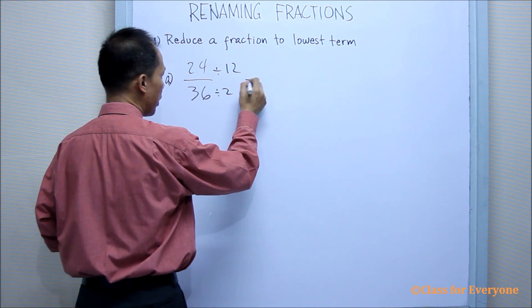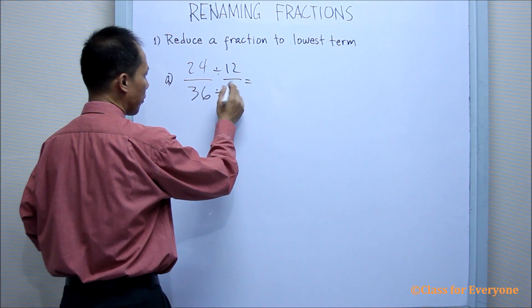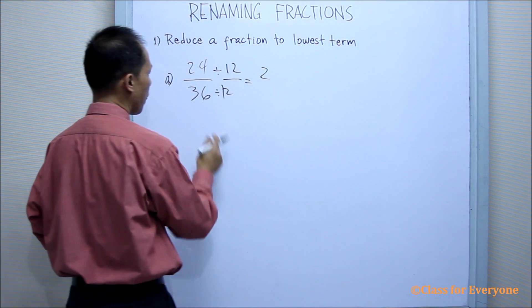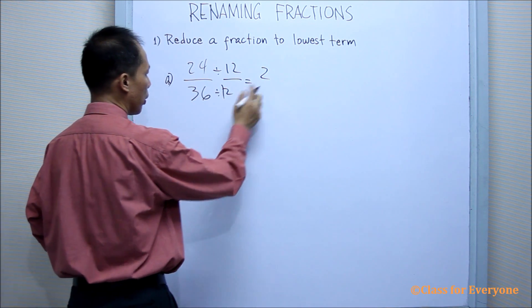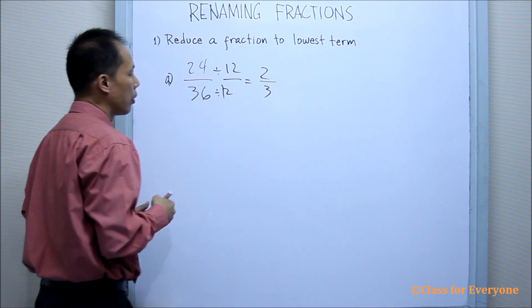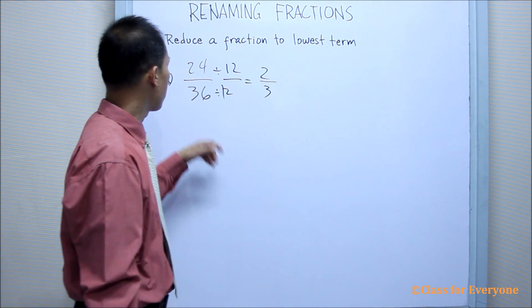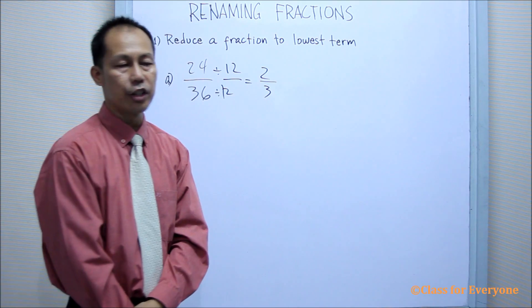Divide both the numerator and the denominator by 12. So 24 divided by 12 is 2, and 36 divided by 12 is 3. 2 and 3 are relatively prime, so it is the lowest term of the fraction 24 over 36.